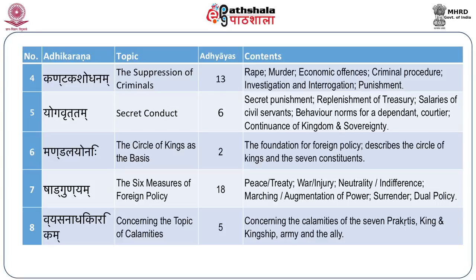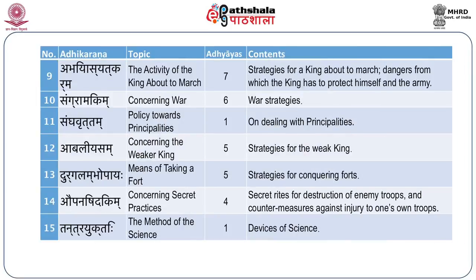These five together form the first part, which is public administration. The second part starts with the mandala theory in the sixth Adhikarana, followed by Shadgunyam or six measures of foreign policy. Then calamities are covered in the eighth Adhikarana, and military issues in the ninth. The remaining Adhikaranas deal with war, policy towards principalities, the weaker king, means of taking a fort, and secret practices. The 14th Adhikarana covers rites designed to bring downfall of the enemy, and the 15th deals with Tantra Yuktis.